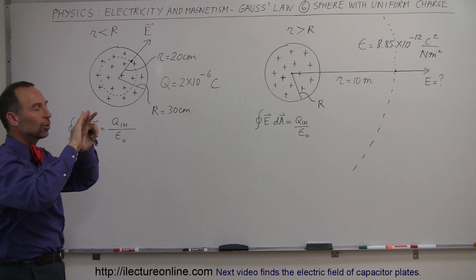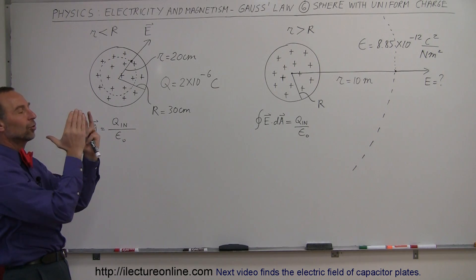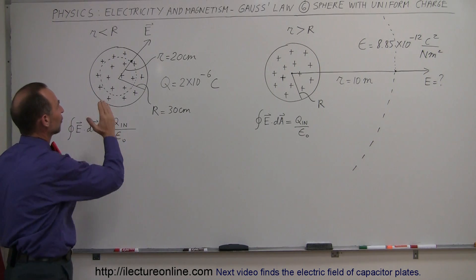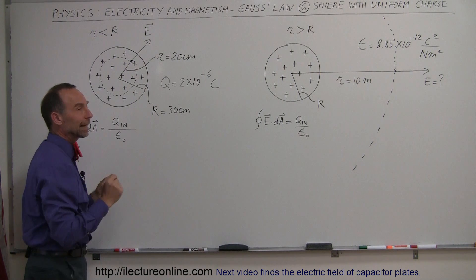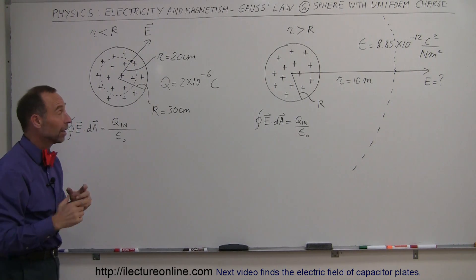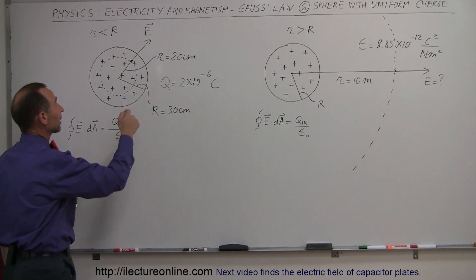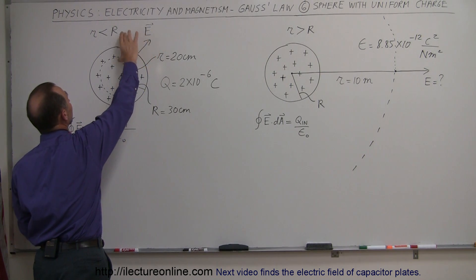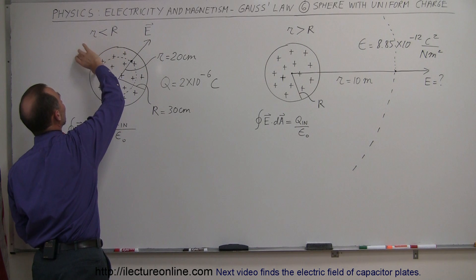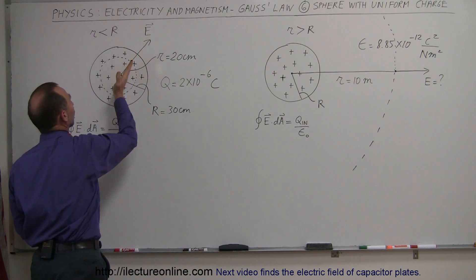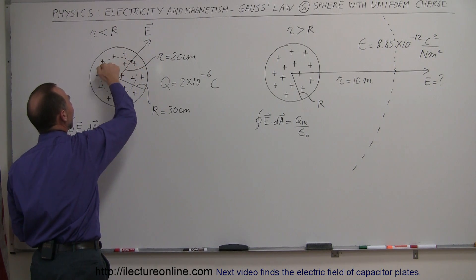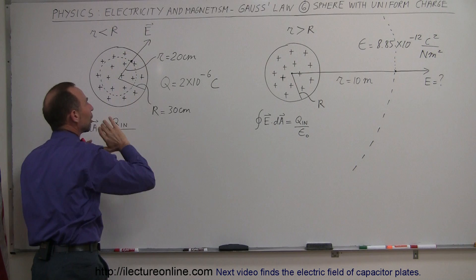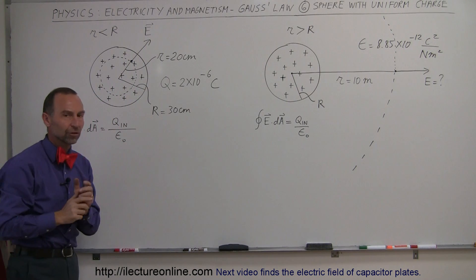What we do is draw a Gaussian surface where the edge of the surface is right at the point where we want to know the electric field strength. The electric field will always be perpendicular away from that Gaussian surface, pointing outward, and will be exactly the same strength everywhere along that surface.